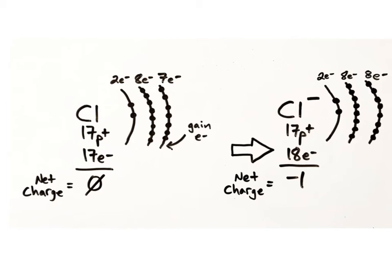For example, an atom of chlorine has 17 protons and 17 electrons. It has an equal number of positive and negative charges, so the atom is electrically neutral. A chlorine atom has 2 electrons in its first electron shell, 8 electrons in its second shell, and 7 electrons in its third and outermost shell. The third shell can hold up to 8 electrons, so the chlorine atom has room for one more electron, which it will accept to become full. After it gains an electron, our chlorine atom has 18 electrons. It still has all 17 of its protons in its nucleus. It now has one more negative charge than positive charge, so it is now a chlorine ion with the charge of negative 1, written as chlorine with the negative superscript.